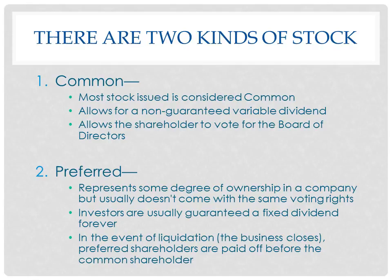The other kind is preferred stock. It comes with ownership in a company, but it doesn't come with the same voting rights. The reason somebody would get involved in preferred stock is because they're guaranteed a fixed dividend forever — you don't get to vote, but you get a guaranteed dividend every year you own that stock. Also, in the event of liquidation — i.e., the business closing — preferred shareholders are paid off before common shareholders. So if you don't care about having control over management, preferred stock is good because you just get your money every year.